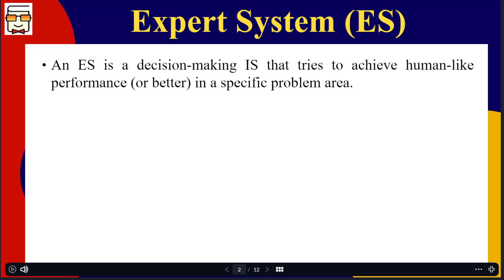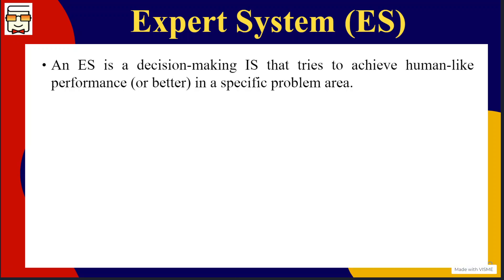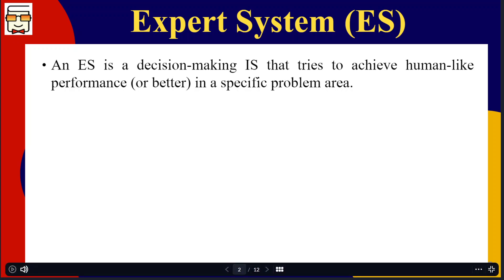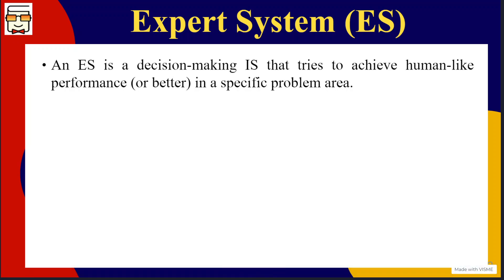An expert system is an information system that accepts some data as input and processes that data to convert it into useful information. This information is used by the expert system itself to make decisions. Earlier we studied decision support systems, where decisions were taken by management, but expert systems are not supporting management — they make decisions on their own based on the information derived from data.